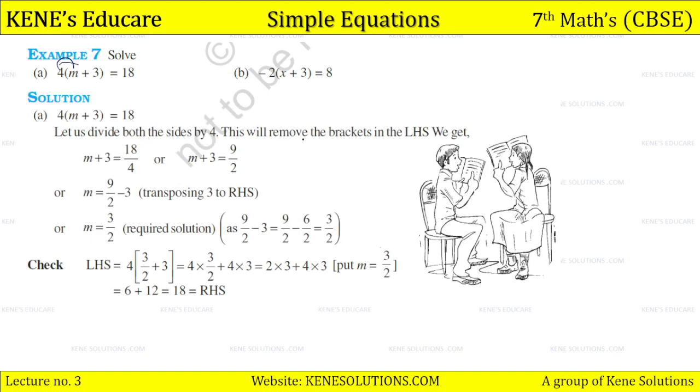So let us divide both sides by 4. This will remove the brackets. In the LHS we get m plus 3 equals 18 by 4. So m plus 3 equals 9 upon 2, or m equals 9 upon 2 minus 3, transposing 3 to the RHS. So m equals 3 by 2, the required solution. In the LHS, look, we verify: we get 18, which equals the RHS. So the method we used here was correct. You can use the distributive law here for the bracket, or solve the bracket first, then solve - there's no problem.